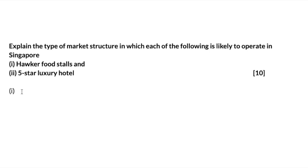Today's question actually comes from a 2005 paper. Question 3 is: explain the type of market structure in which each of the following is likely to operate in Singapore. Firstly, you have got hawker food stalls, and then secondly, you have got 5-star luxury hotels.